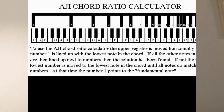It shows that if one C has a frequency of one, one octave above has a frequency of two, the next G is three, the second octave above C is four, then E is five, G is six.